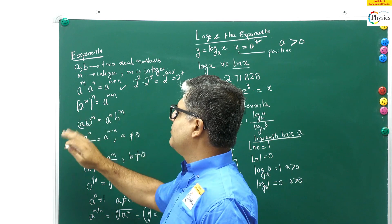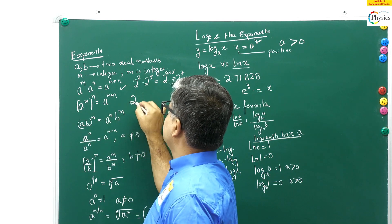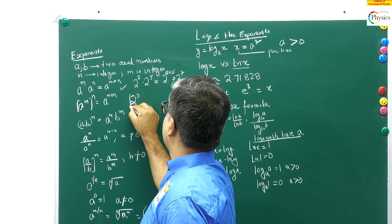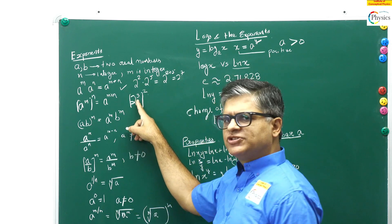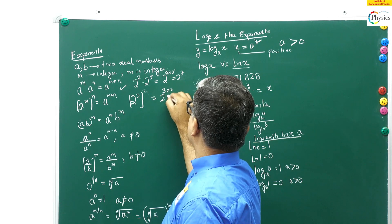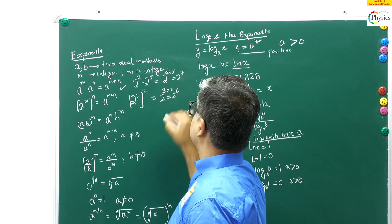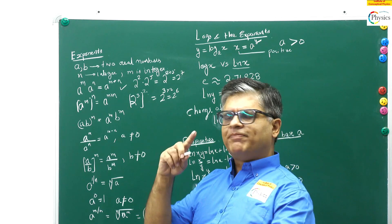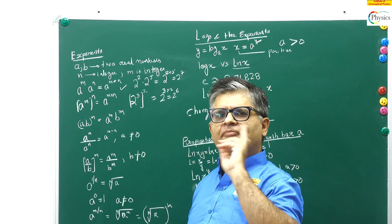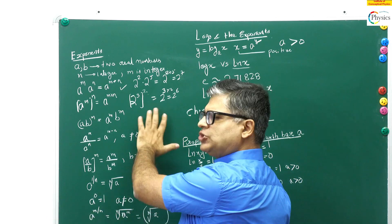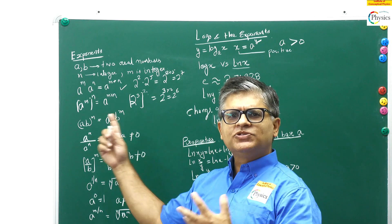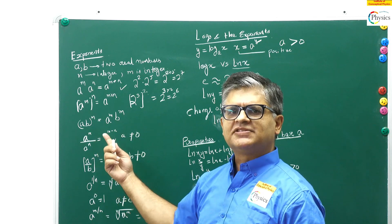The second property: if you have a base raised to a power, and then that whole thing raised to another power — for example 2 raised to power 3, raised to power 2 — you multiply the powers, giving 2 raised to power 6. If you see two powers on a base, immediately multiply the powers. This is also taught in lower classes but is a quick revision for NEET students who make silly mistakes.